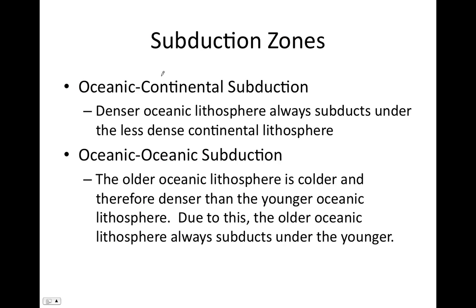A summary of subduction zones: when you have oceanic-continental convergence, oceanic lithosphere always subducts under continental lithosphere. When you have oceanic-oceanic convergence, the older, therefore colder, and therefore denser oceanic lithosphere subducts under the younger, warmer, less dense oceanic lithosphere.